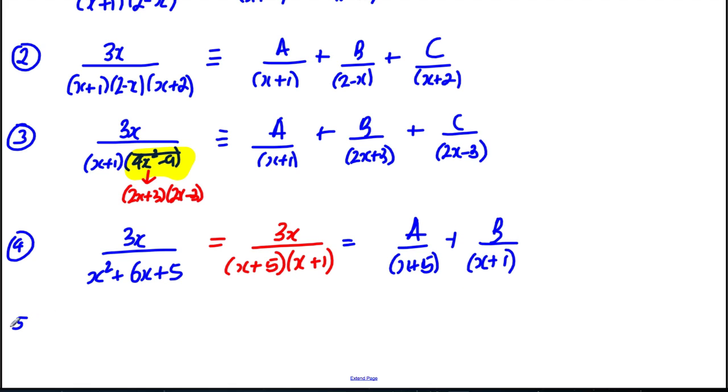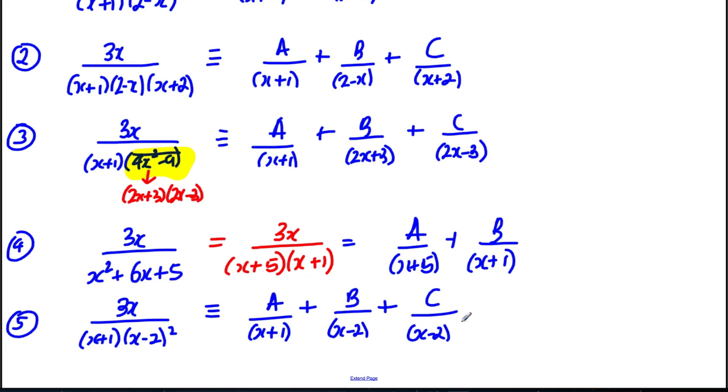The last thing to bear in mind here with a repeated root: suppose we had 3x over x plus 1, x subtract 2 squared. The standard result you need to know, this would be a number over the first distinct factor plus a number over the second distinct factor to the power of 1 plus a third number over x minus 2 all squared. So you need to know those standard results.